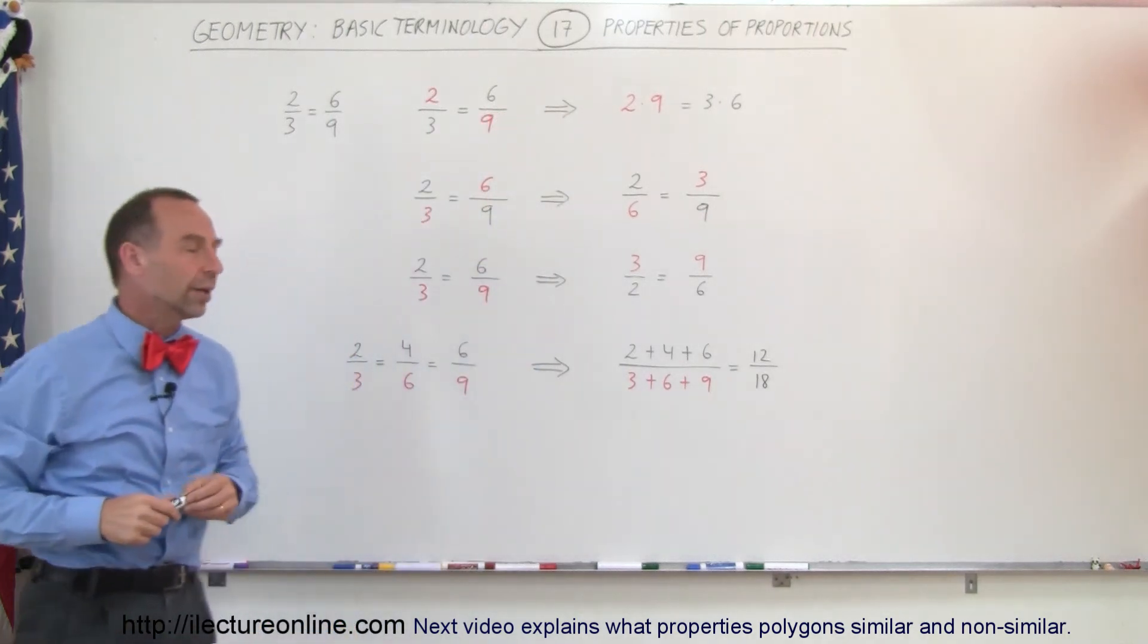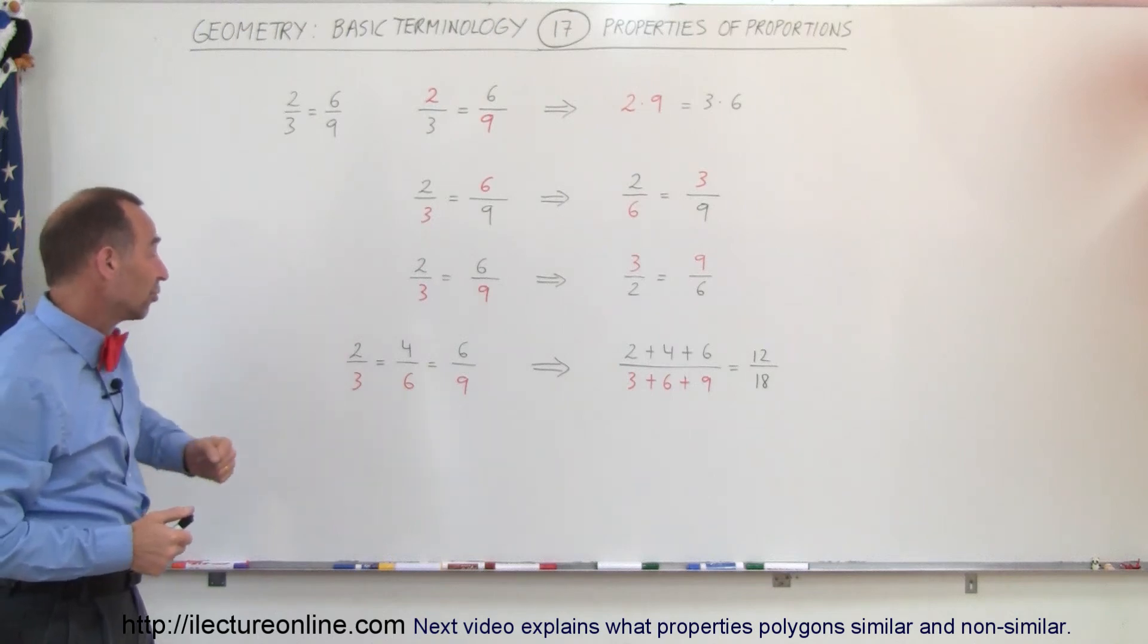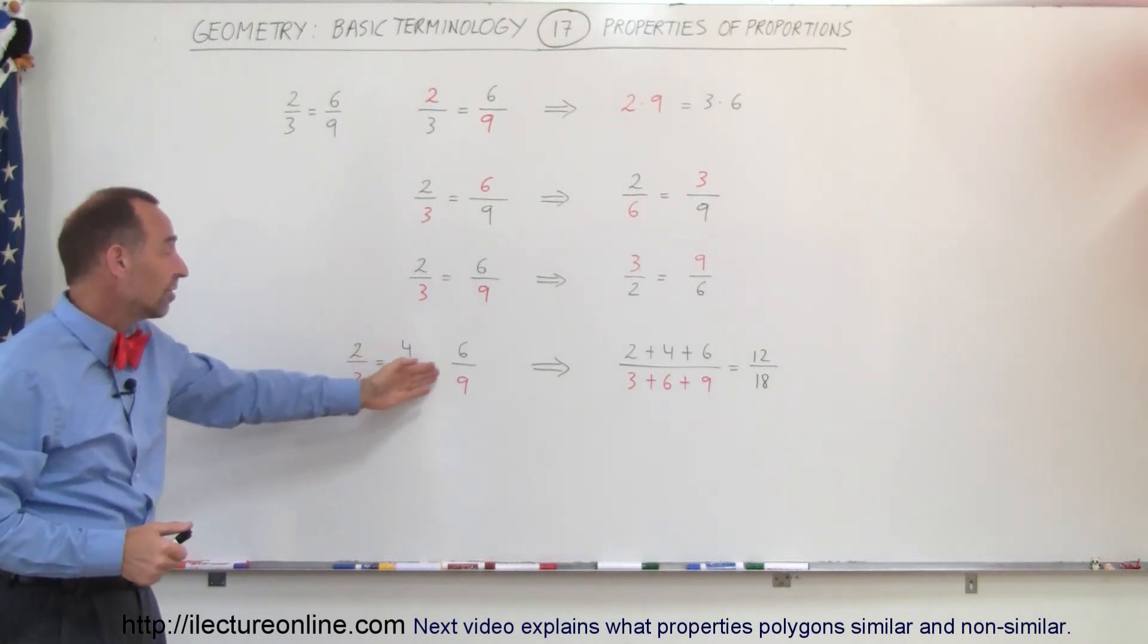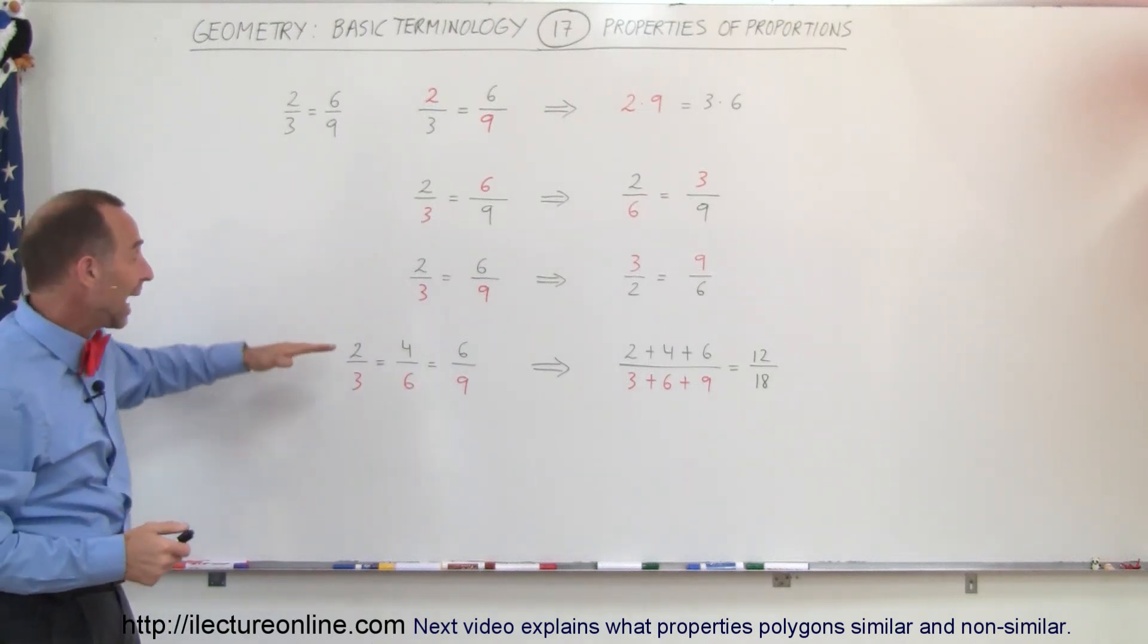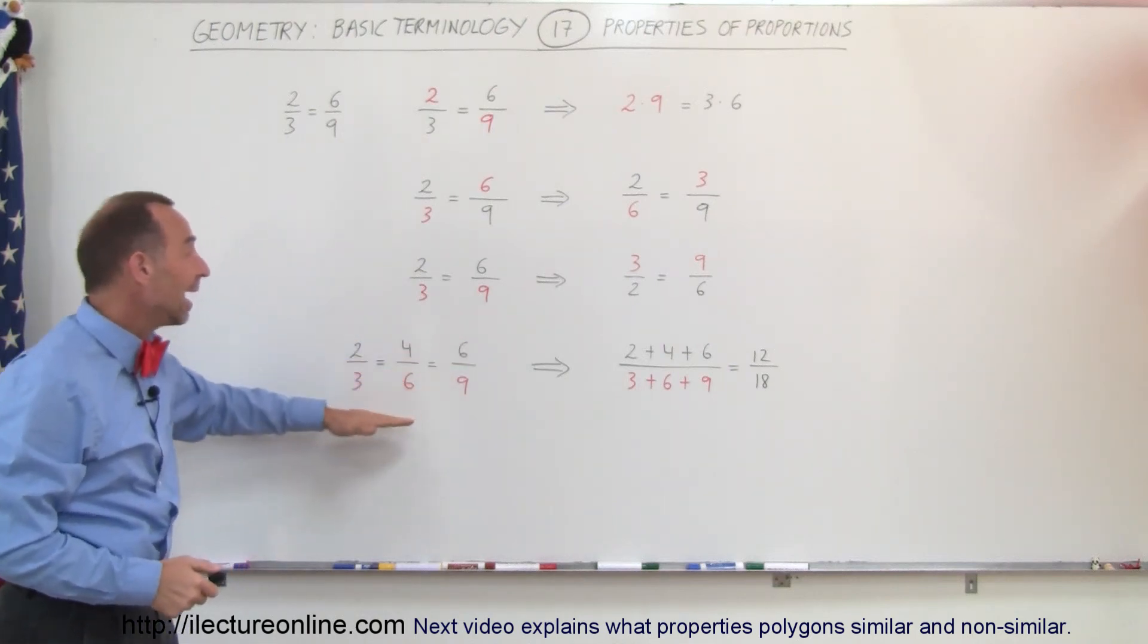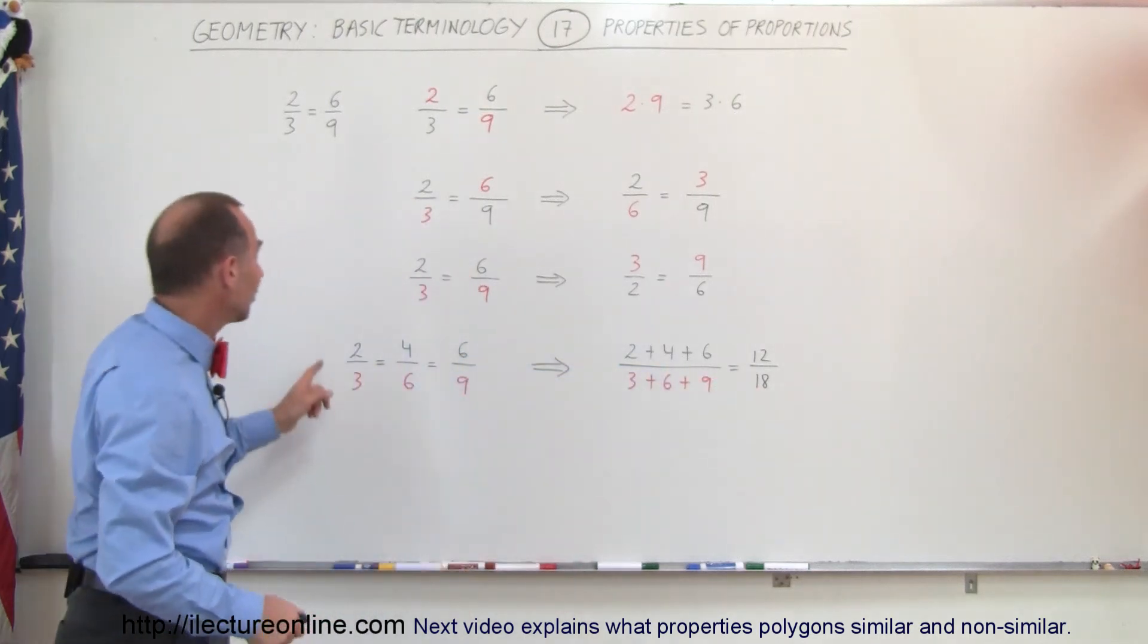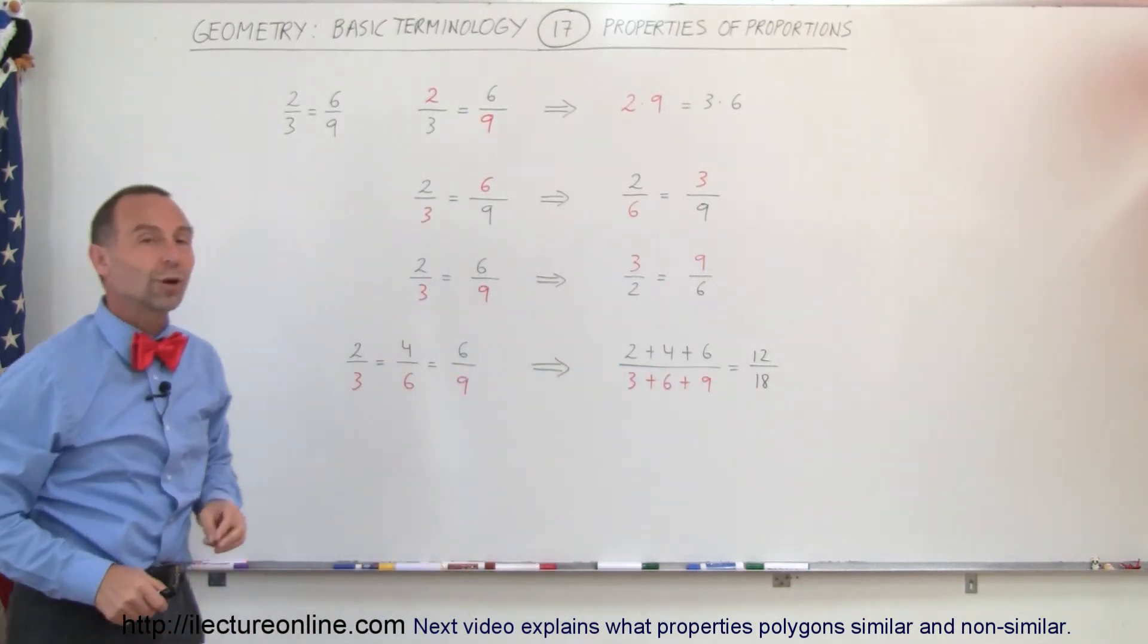And another thing we can do is, let's say we have three fractions right here, 2/3 equals 4/6 equals 6/9, we can simply add up all the numerators and add up all the denominators, and we can say that this is therefore equal to that, which is equal to any one of these ratios.